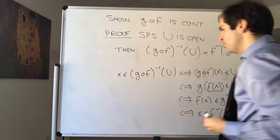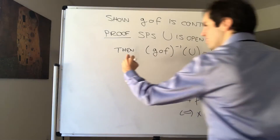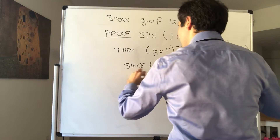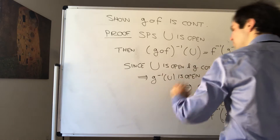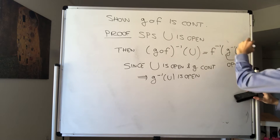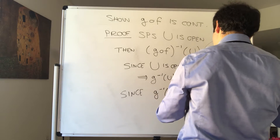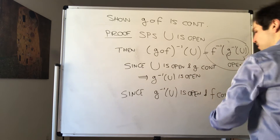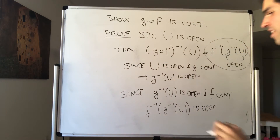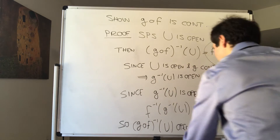Here's the awesome thing. Since u is open and g is continuous, we know g inverse of u is open — just by definition of continuity. But now, since g inverse of u is open and f is continuous, then f inverse of g inverse of u is also open. So (g∘f) inverse of u is open, which implies that g composed with f is continuous.